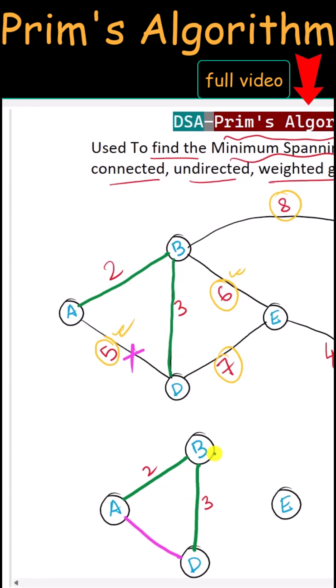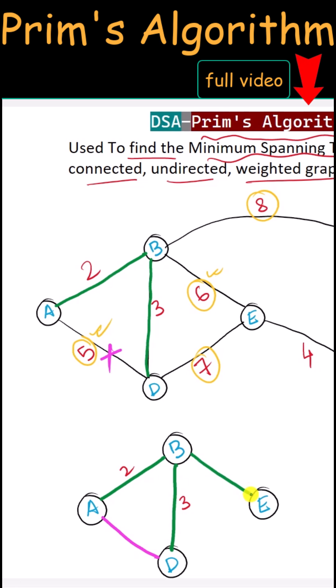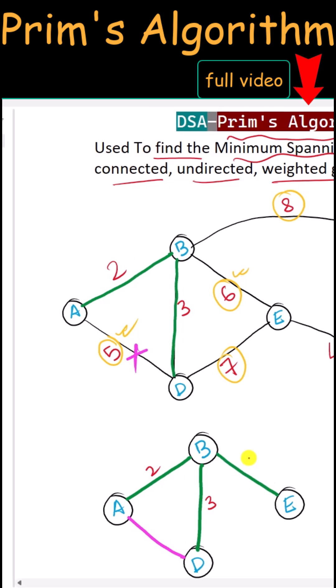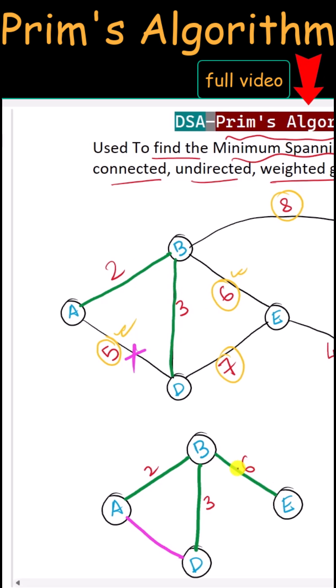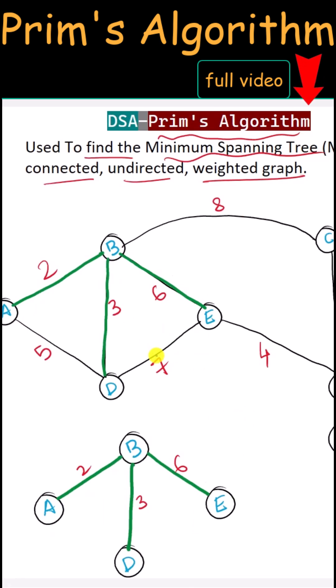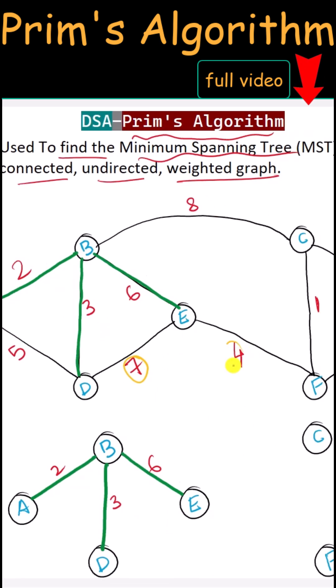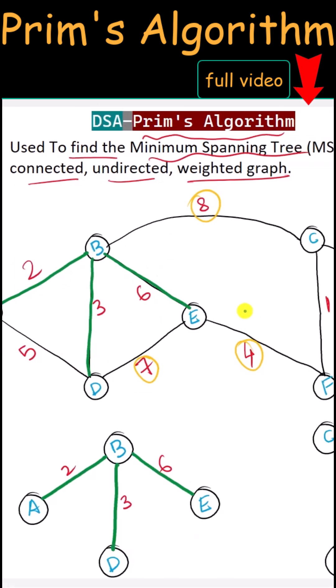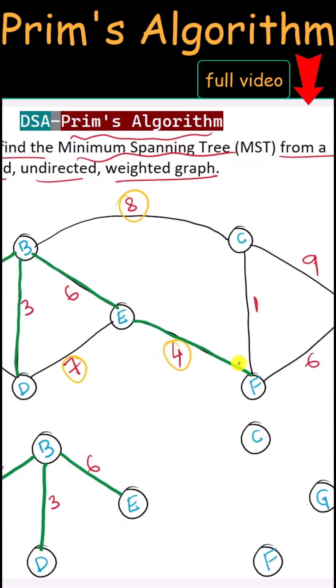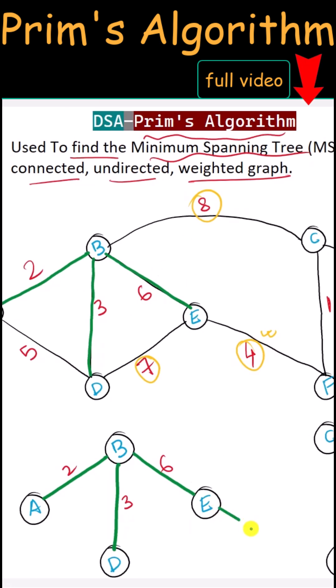Since we cannot use the edge with weight five, the next smallest is six, so we take that edge instead. Now we compare between edges with weights seven, four, and eight, and we choose four as the smallest, so we take that edge.